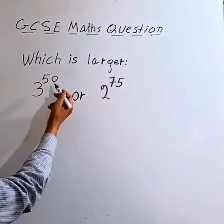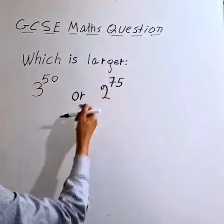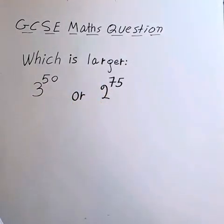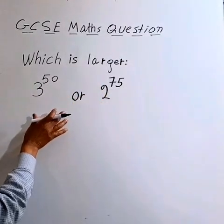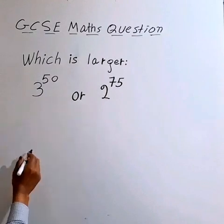Which is larger: 3 to the power of 50, or 2 to the power of 75? Let's rewrite both expressions.